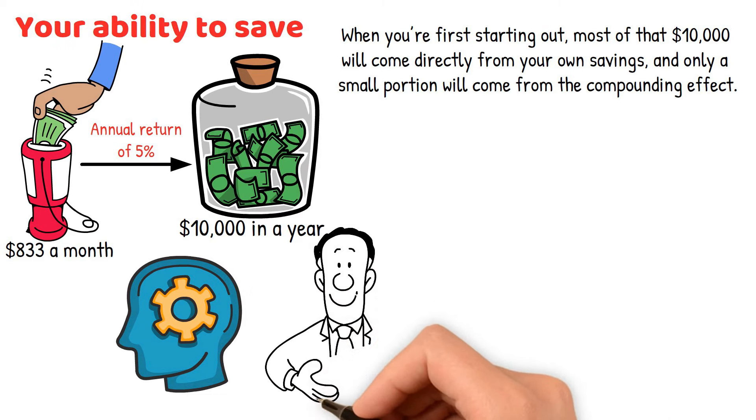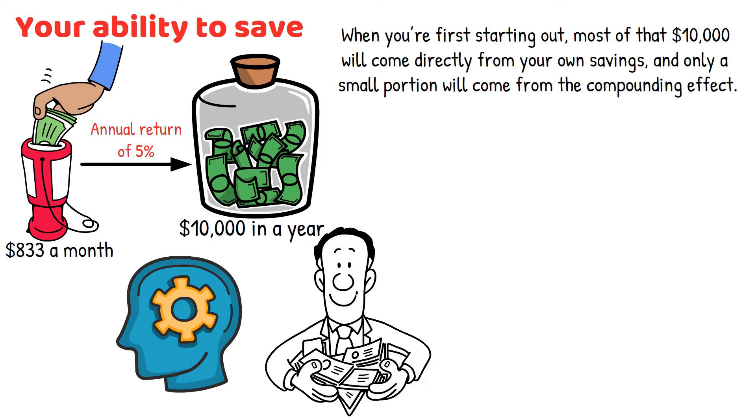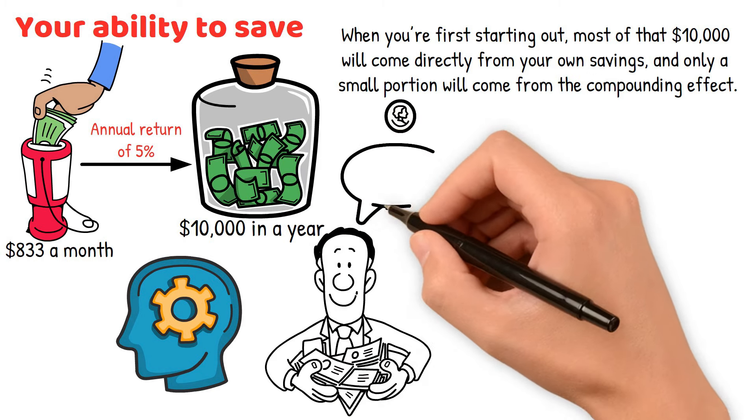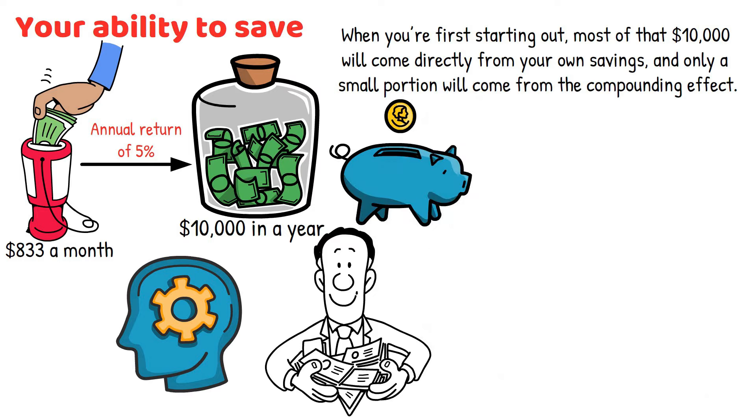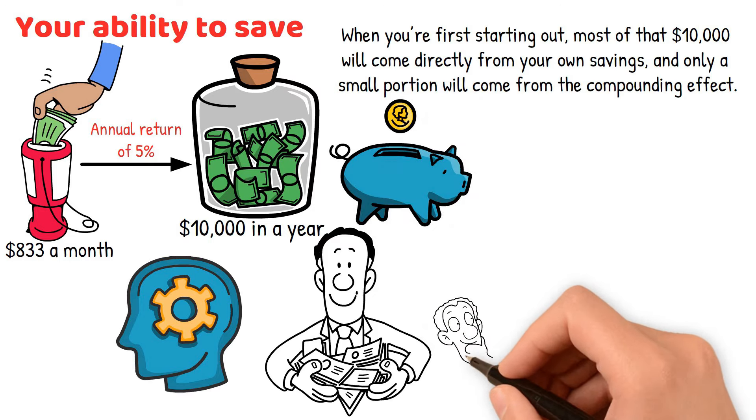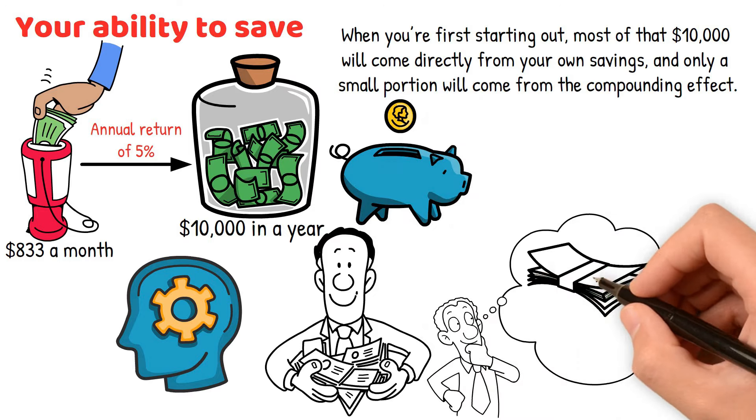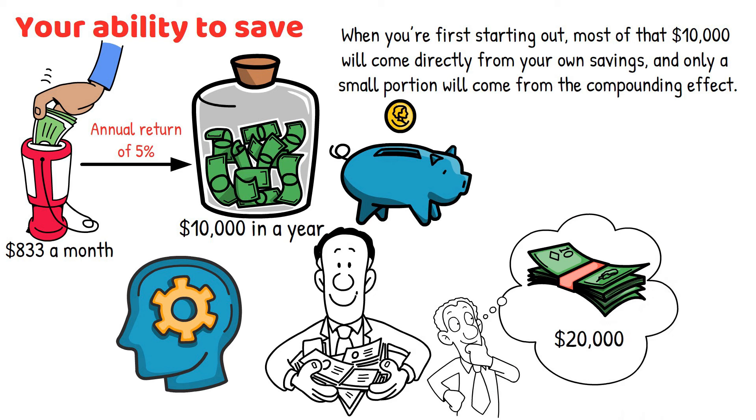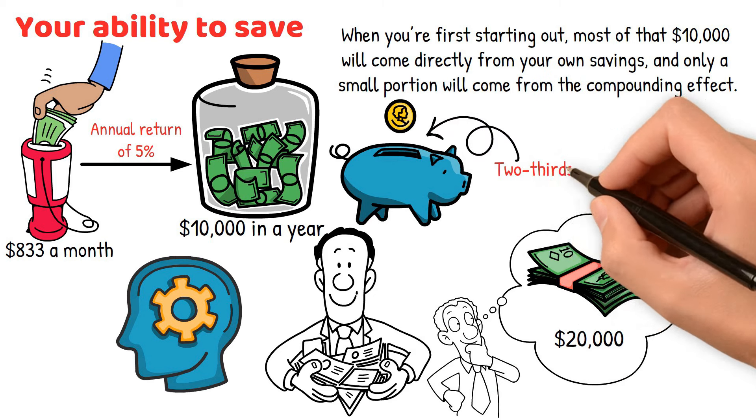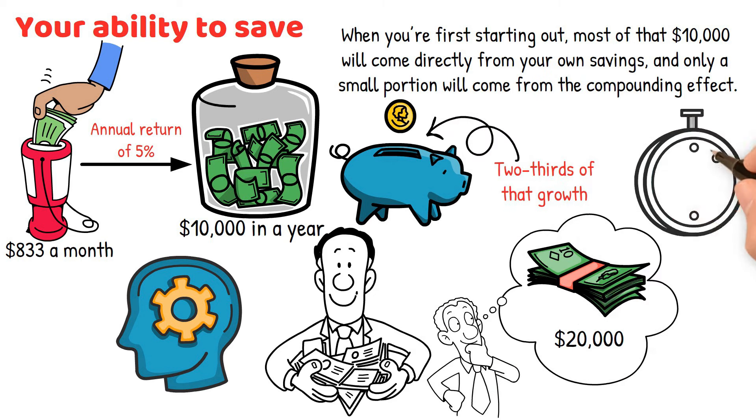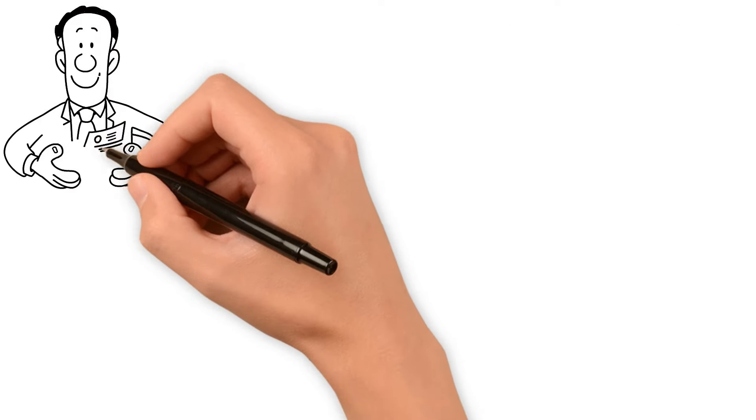As you continue saving and reach your next $10,000, things start to shift. Now the money you're saving each year becomes a smaller part of your total wealth. For example, when you're working towards $20,000, about two-thirds of that growth will still come from your savings, but the compounding effect is starting to play a bigger role. And it only gets better from there.